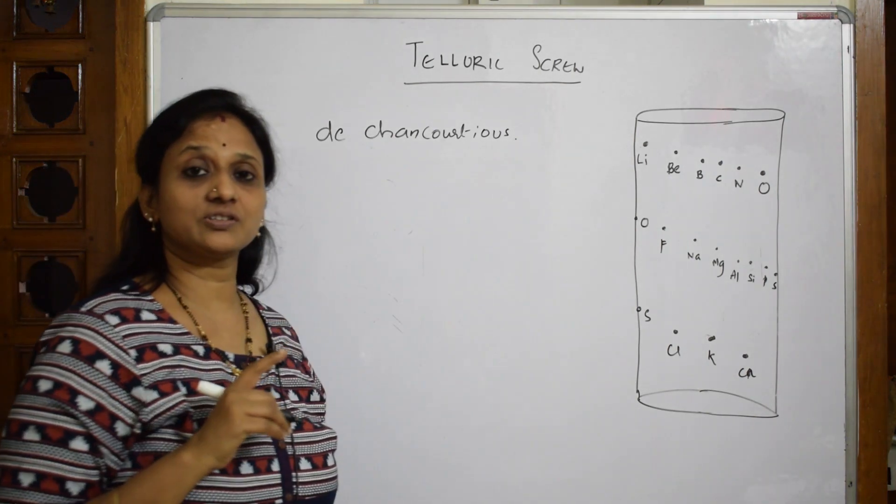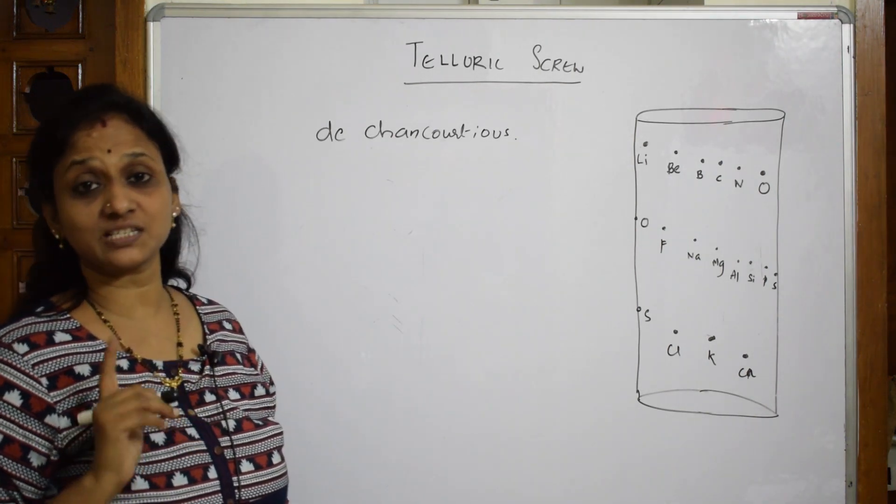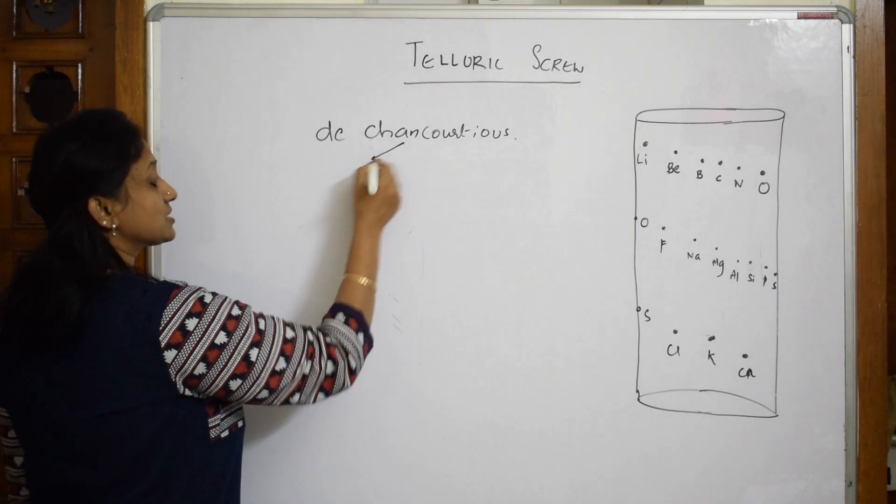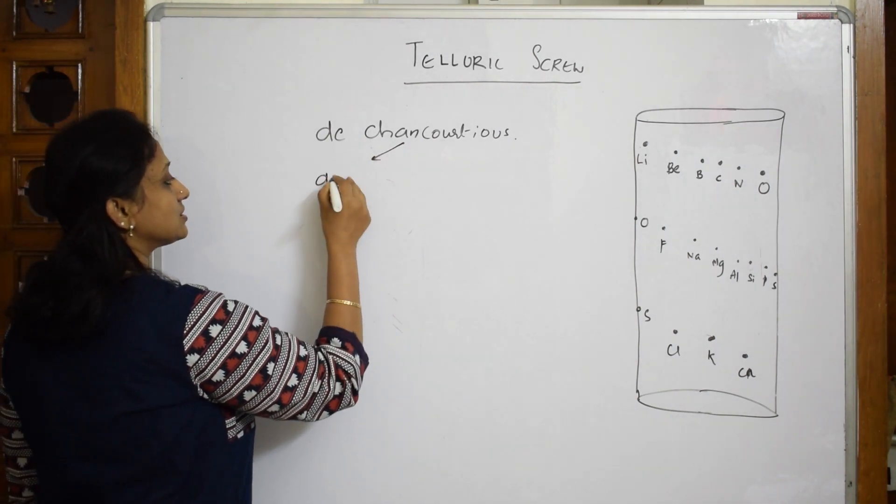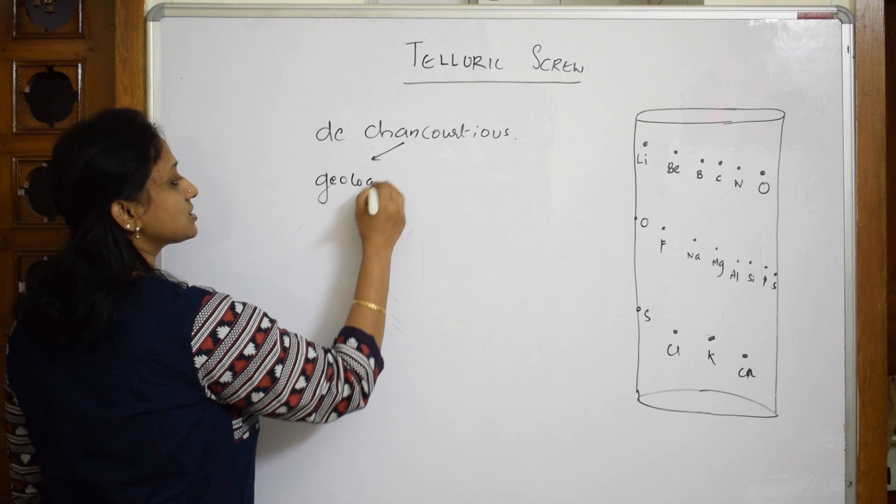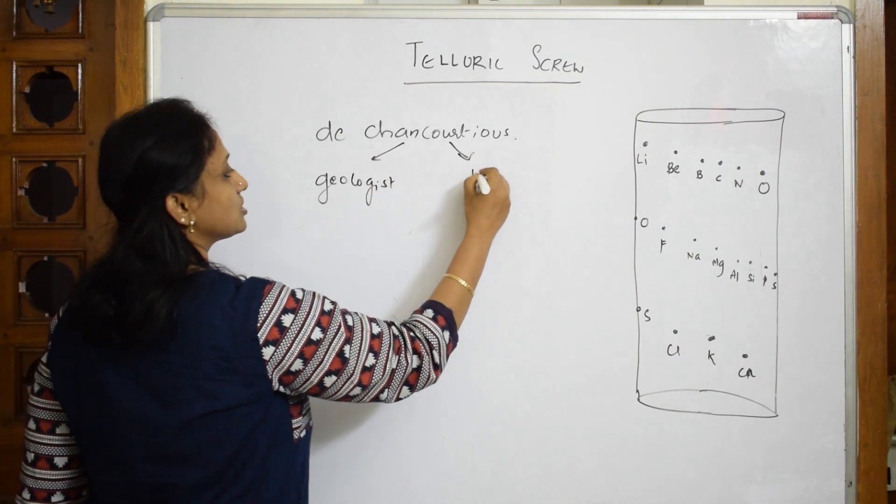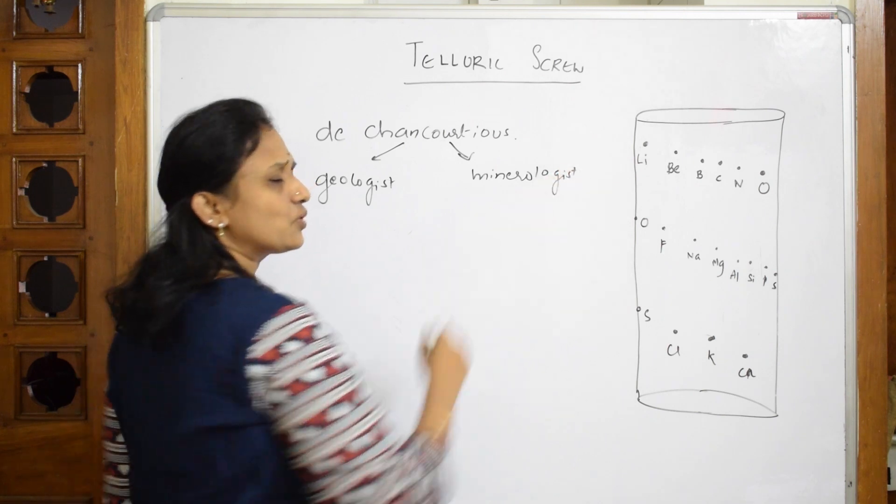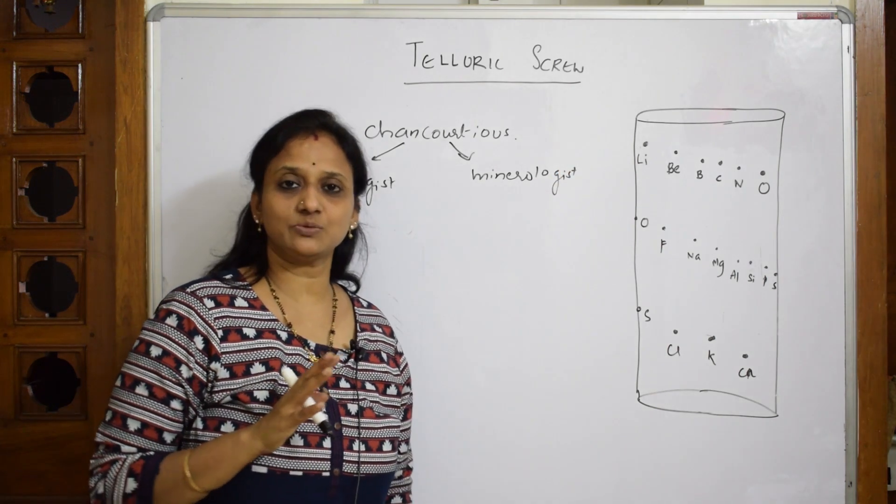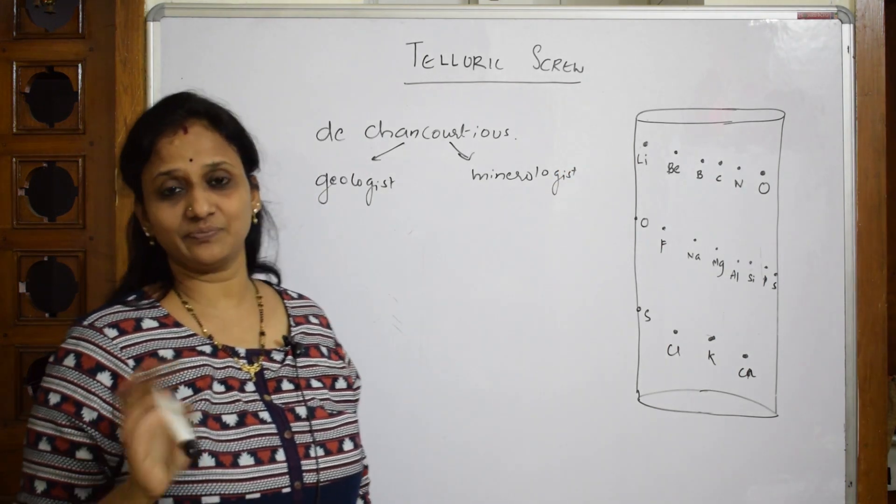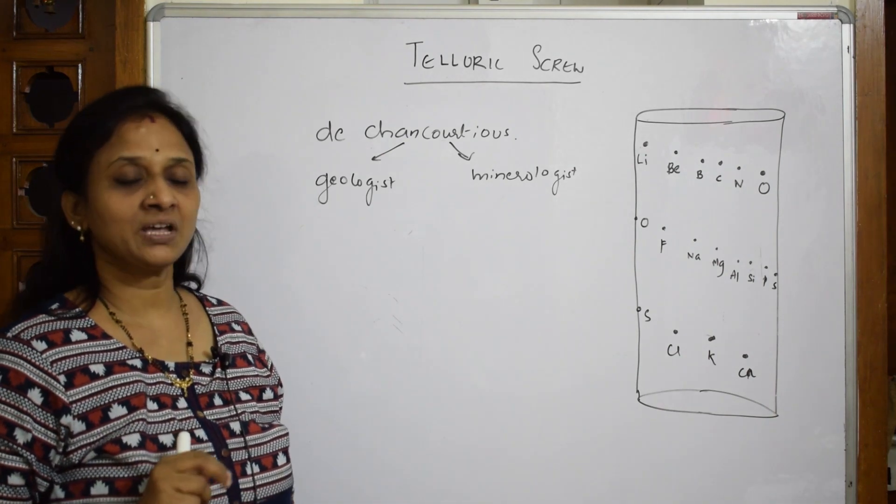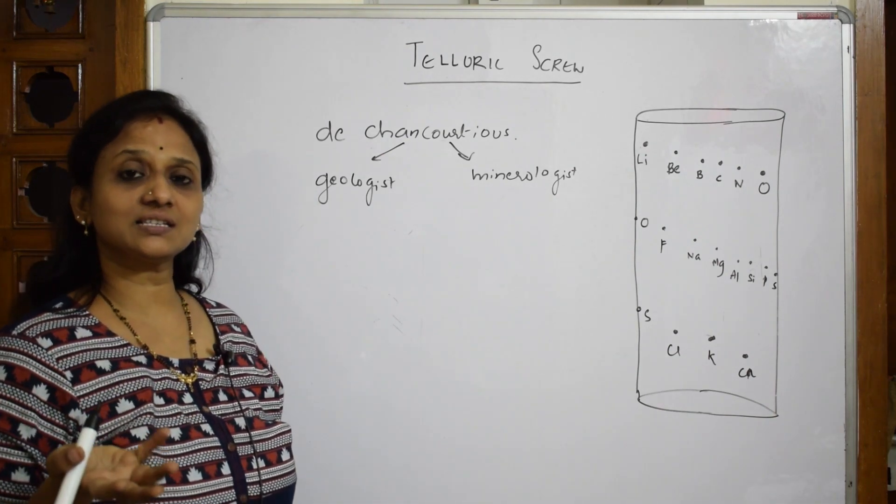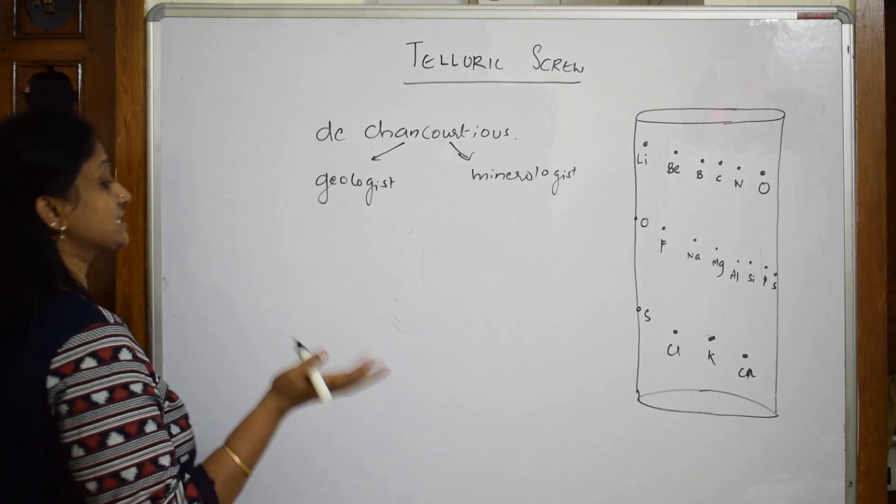De Chancourtois, he was a geologist as well as mineralogist. This is his profession. He was born in 1820, almost 1820 and he died in 1880, just 60 years of age. He has given us the table in the year 1862.